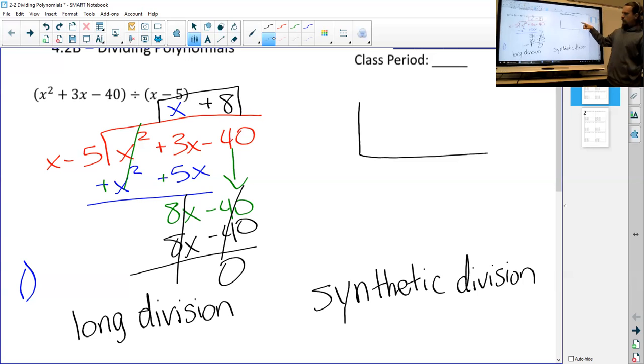Up here I'm going to write my x squared plus 3x minus 40, but I'm only going to put the coefficients. So instead of putting x squared, I'm just going to put 1 because it's 1x squared. Then I'm going to put a 3 because that's the coefficient to x, and then negative 40 is just negative 40.